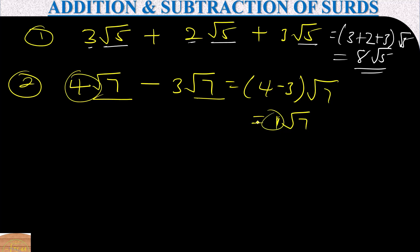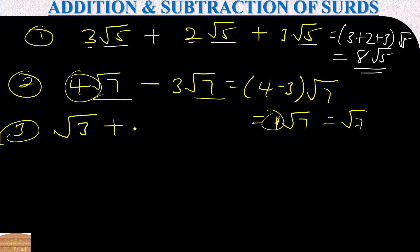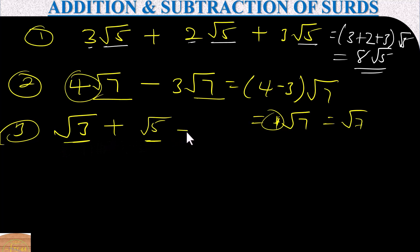Example three: 3√3 plus 8√5. These are of different forms — √3 and √5 are not the same — so we cannot combine them. The answer remains as 3√3 plus 8√5.